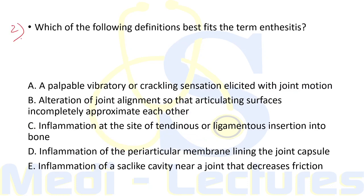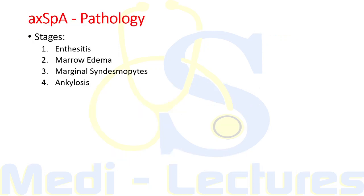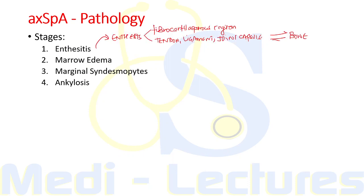Question two: which of the following best fits the term enthesitis? Before answering, let's discuss the pathology of axial spondyloarthritis. Stage one is enthesitis — inflammation of the enthesis. The enthesis is a fibrocartilaginous region that connects tendon, ligament, or joint capsule with bone. This stage of enthesitis is seen in all patients of spondyloarthritis, both axial and peripheral.